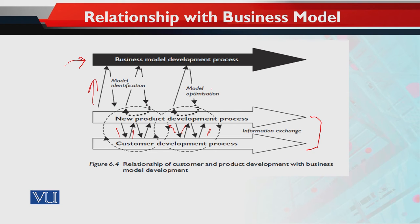Model identification and model optimization arrows are continuously impacting the business model. The information we receive about product development and the changes we make to the product — keeping that in view, we also keep changing the business model. Sometimes the assumptions placed in the model have to be changed. Sometimes the change is so significant and so much is required that if none of the assumptions are correctly validated, we also change the business model.